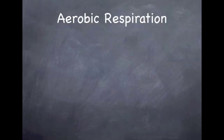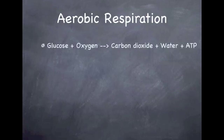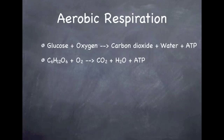To summarise aerobic respiration: glucose is combined with oxygen and this produces carbon dioxide, water, and ATP. You generate a total of 36 ATP, and this includes the two produced in glycolysis.